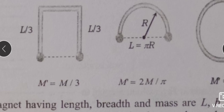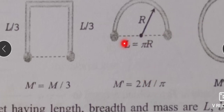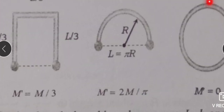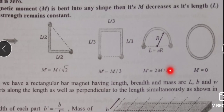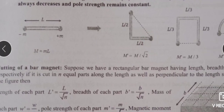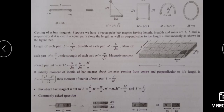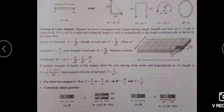For bending a wire at 90° into 3 equal parts, the magnetic dipole moment is M/3. For semicircular bending, the magnetic dipole moment becomes 2M/π, where M is the original value for the straight wire of length L. For a circular loop, we can also calculate the magnetic dipole moment. In MCQ-type questions, any shape may be asked and we have to find the answer.